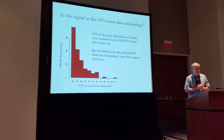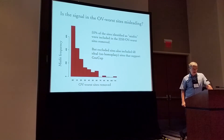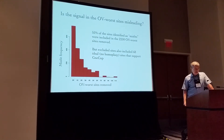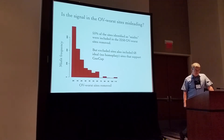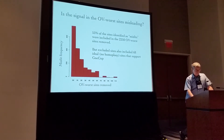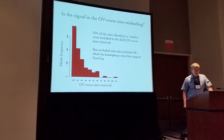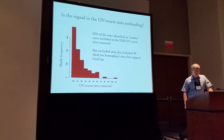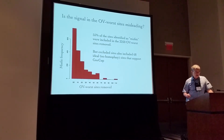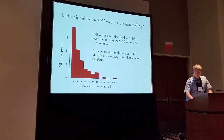Zhang et al. used the program Misfits to identify sites with patterns that were under- or over-represented based on a particular tree topology and substitution model. About half of these misfits were among the 2,250 worst OV sites they removed, providing some basis for the claim that high-OV sites are enriched for potentially misleading signal. However, OV also excluded 68 slowly evolving sites with no homoplasy that supported the Gnetifer hypothesis supported by the entire chloroplast genomes — these sites had high OV values not because of a high rate, but because they changed once on the very branch supporting the Gnetifer hypothesis. So OV removed many perfectly good characters along with misleading sites.